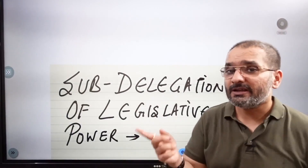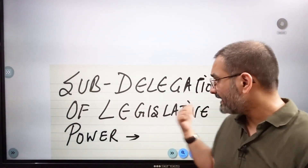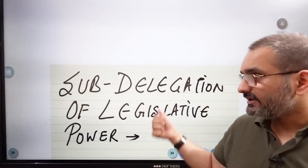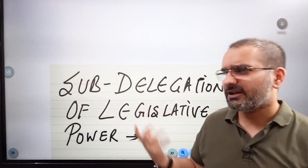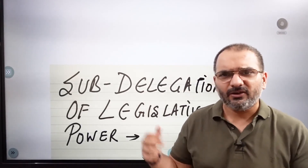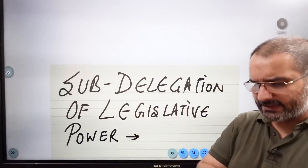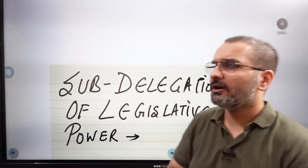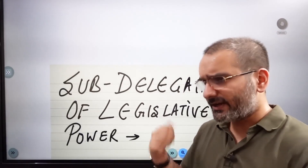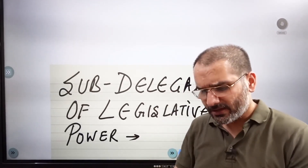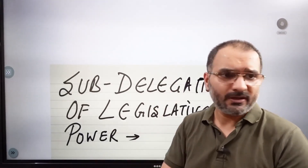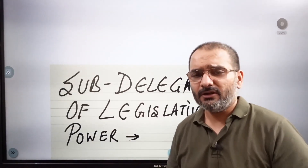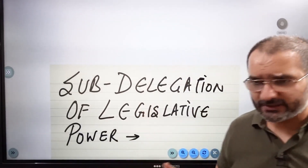Now we come to the last lecture of this topic: sub-delegation of legislative powers. It is a very short, roughly 10-12 minute lecture. After that, our topic of controls over delegated legislation will be complete. Then we will move on to principles of natural justice, writs with respect to administrative law, and the ombudsman — and that will finish our administrative law syllabus. Wishing you all the best.